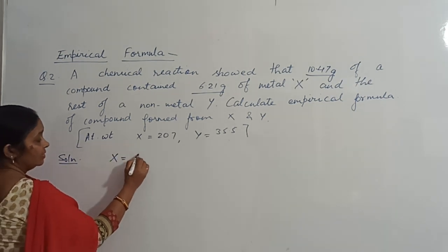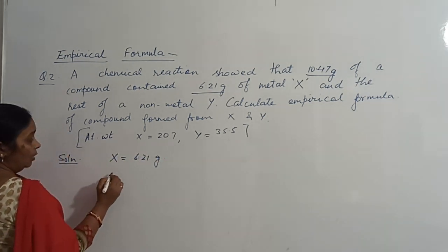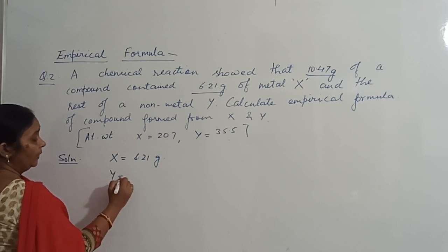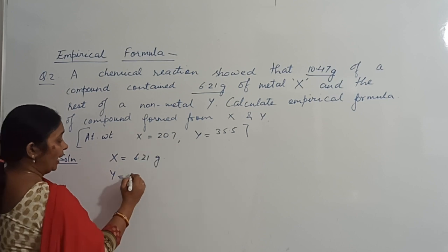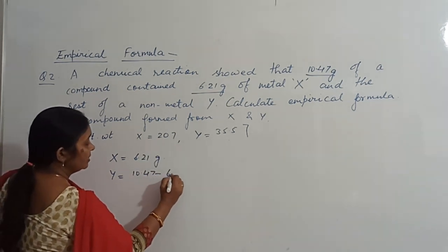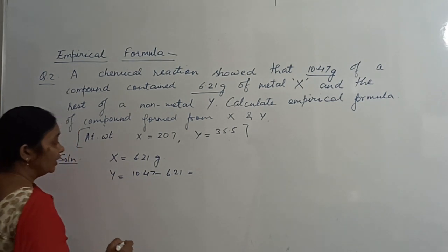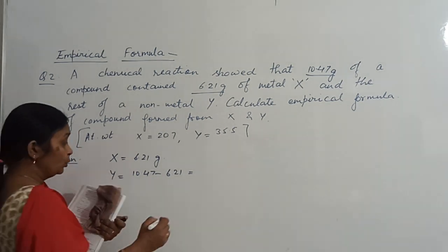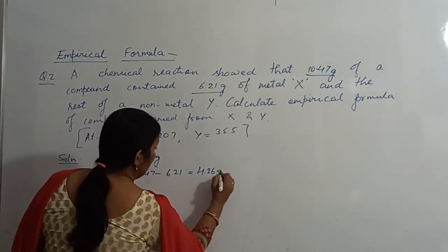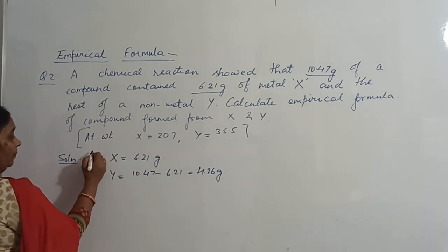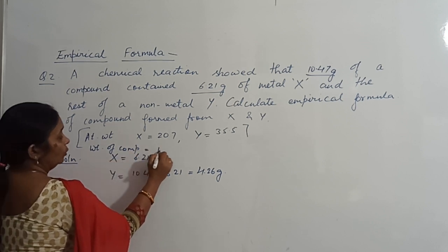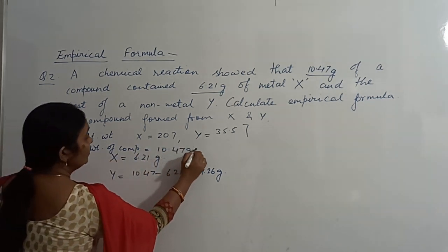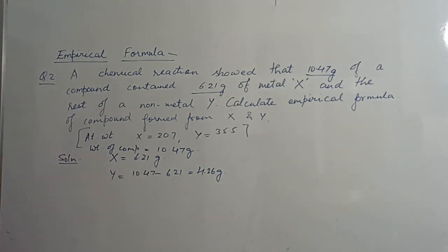X is 6.21 grams. Then Y will be what? 10.47 is the total weight, so Y will be 10.47 minus 6.21. It will come to about 4.26 grams. So in this compound, the total weight of compound is equal to 10.47 grams, X is 6.21, and Y is 4.26.